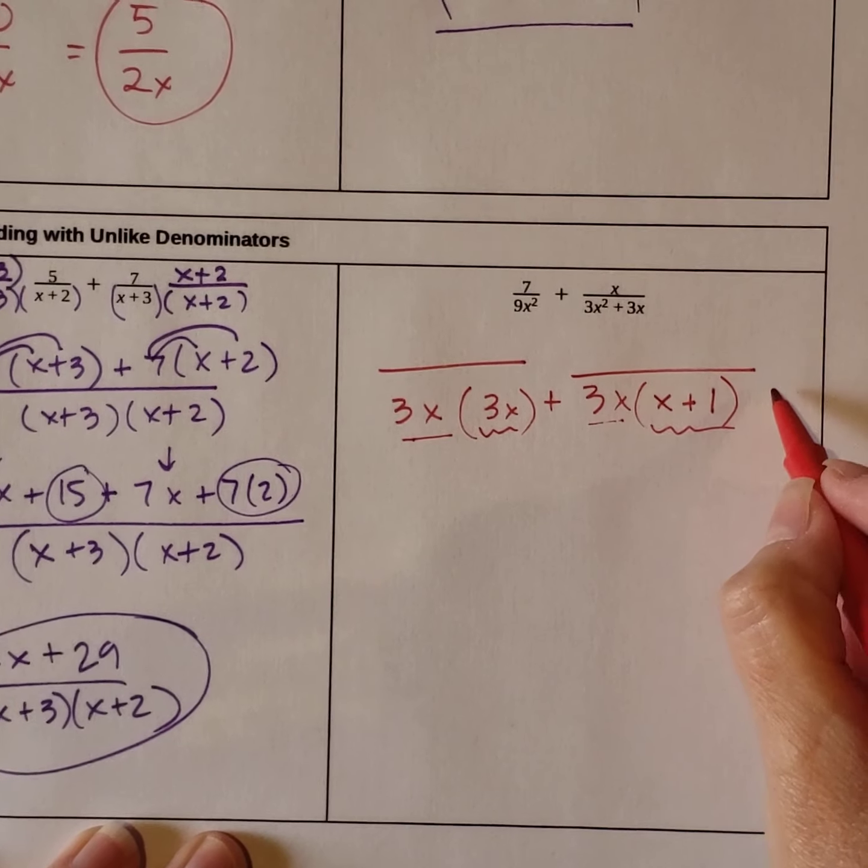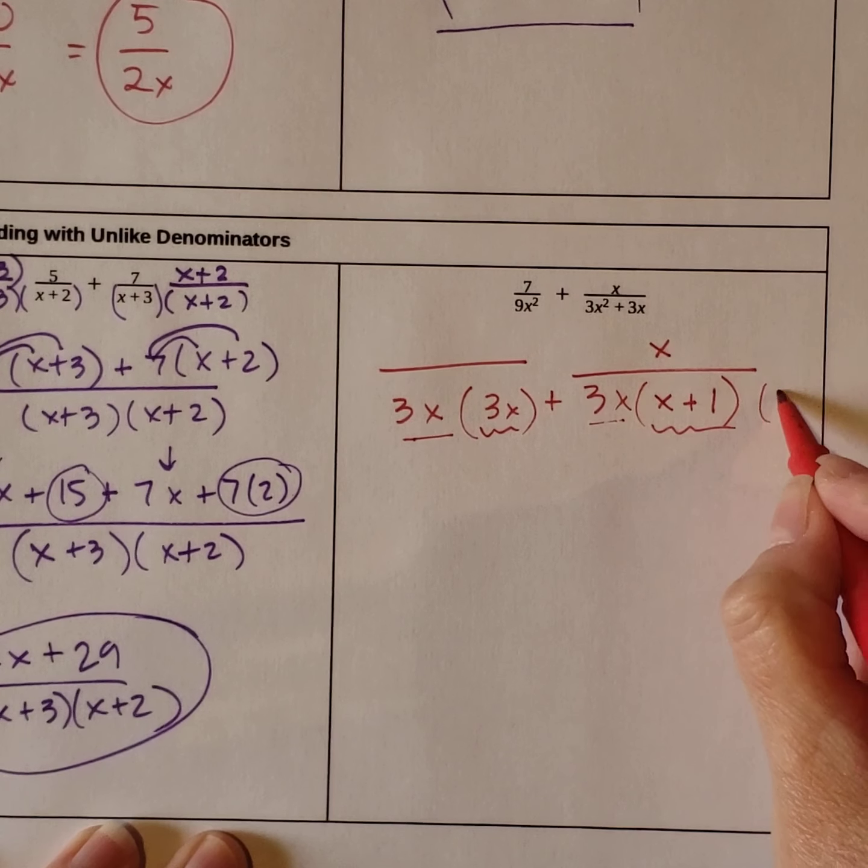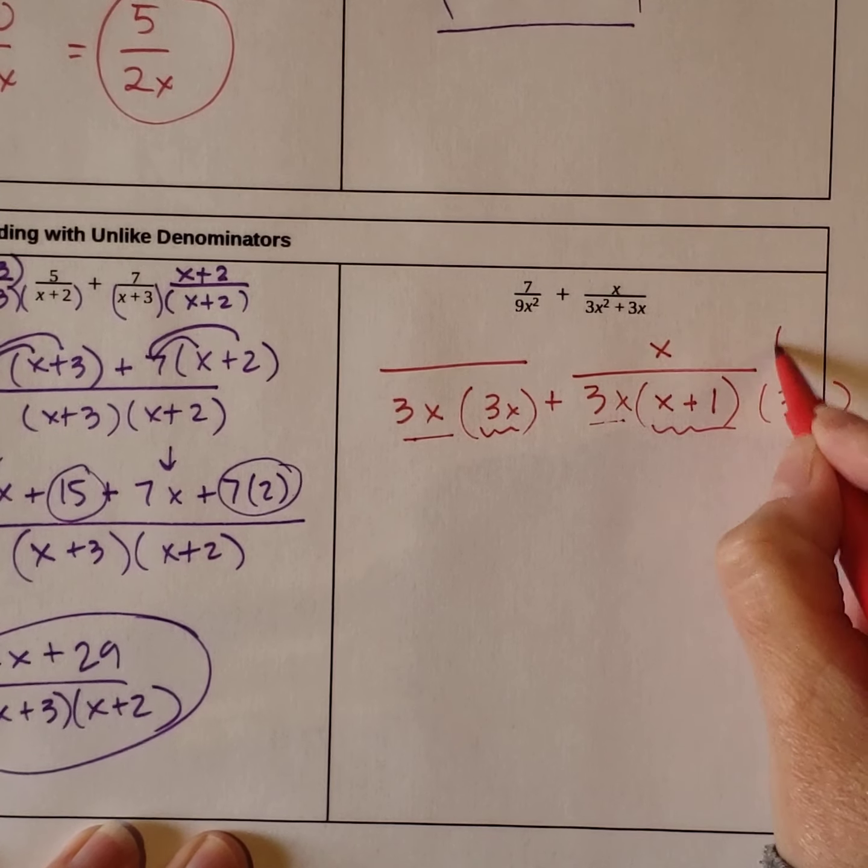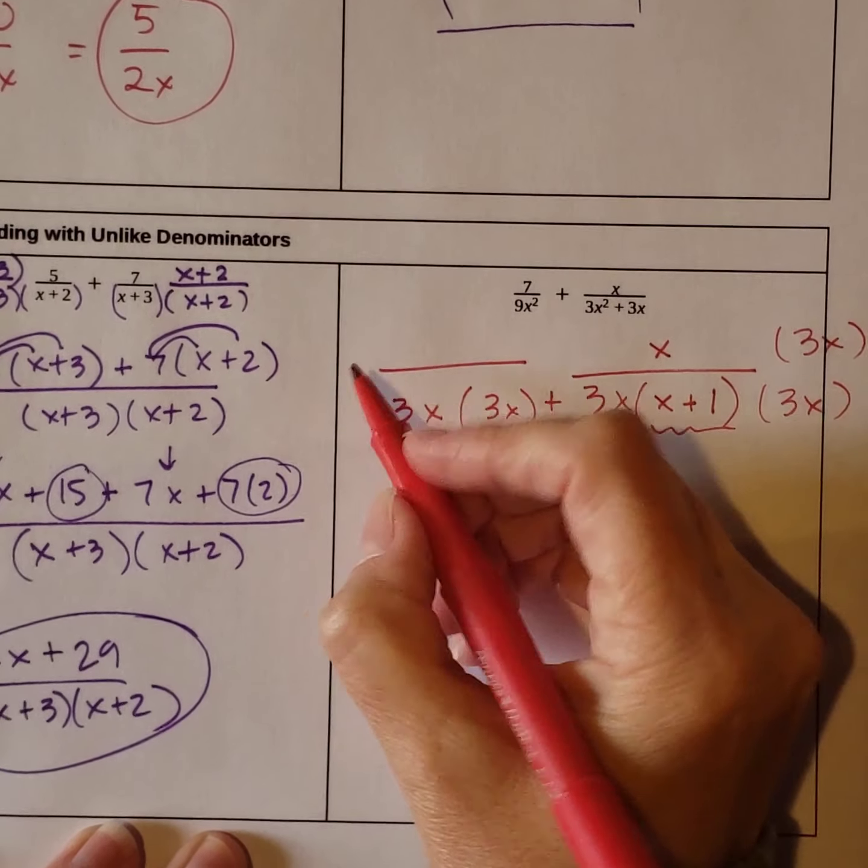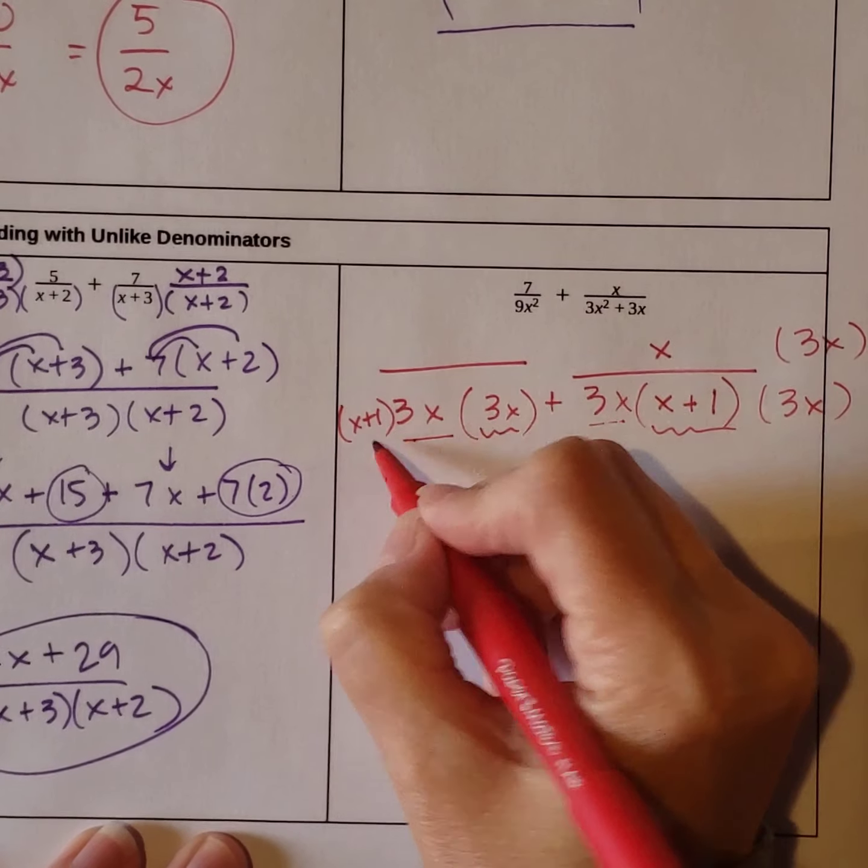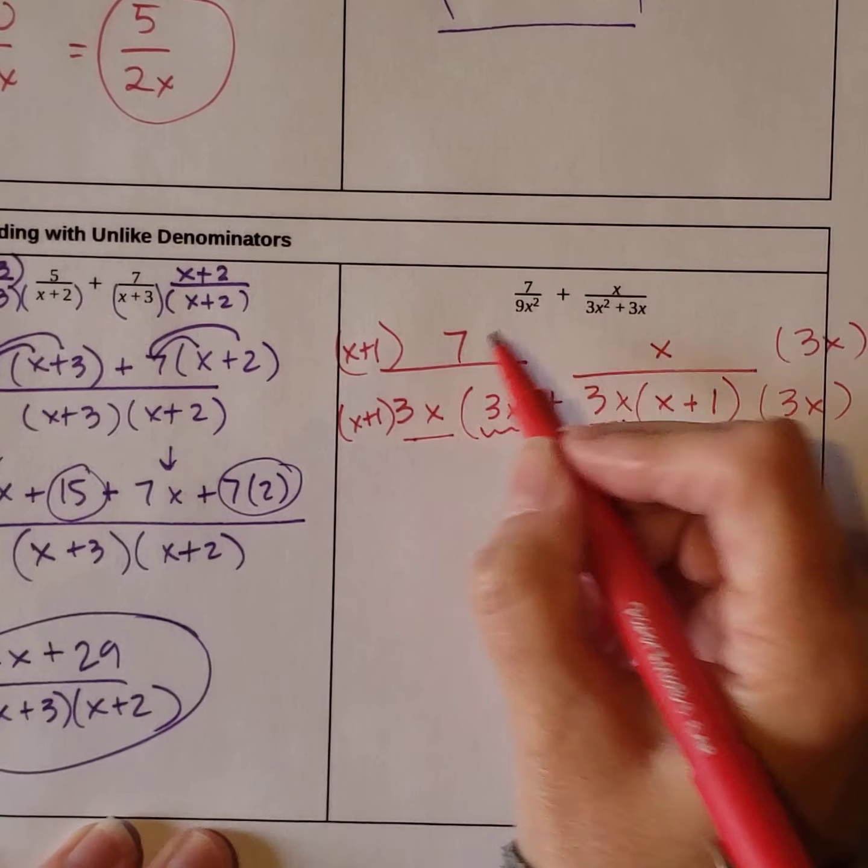So if I multiply the right side by this 3x that they didn't have in common, then I'll write it like this. And then on the left side, they didn't have the x plus 1 in common. So top and bottom times 7.